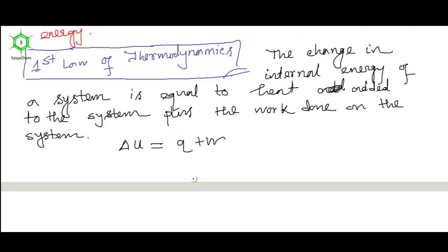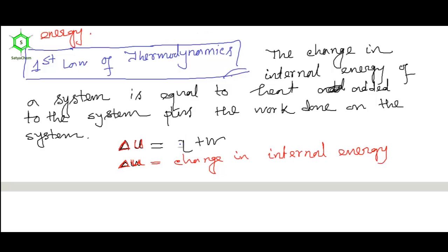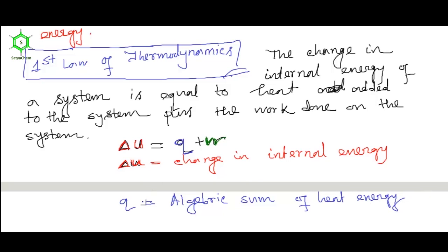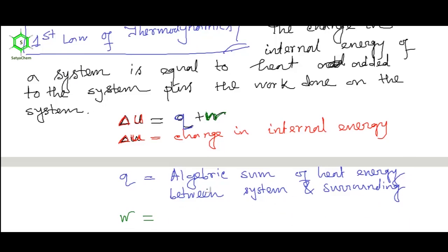What is delta U? Delta U is the change in internal energy. Whereas Q is the algebraic sum of heat energy between system and surroundings. Now, W stands for work done. When work is done on the system, it is positive, and work done by the system, it is negative.